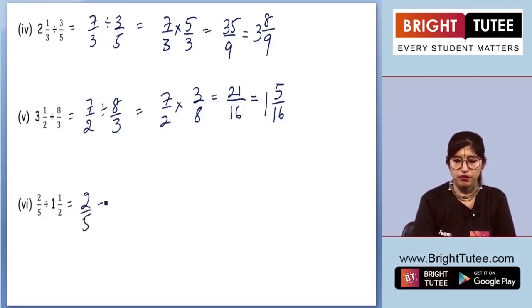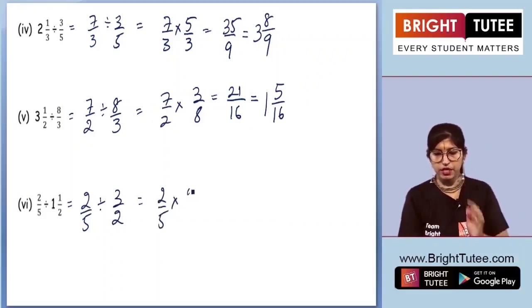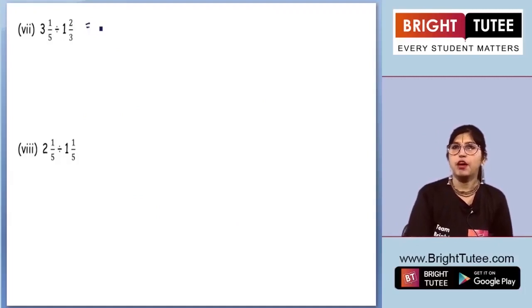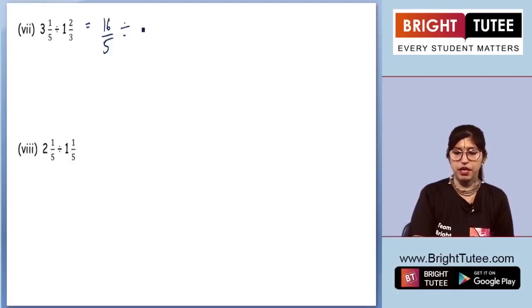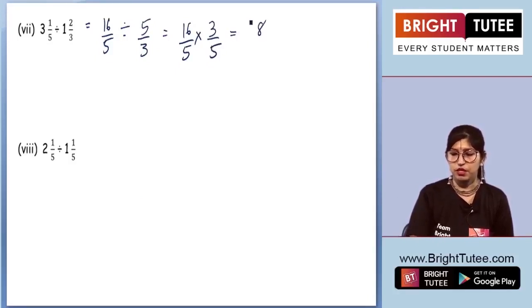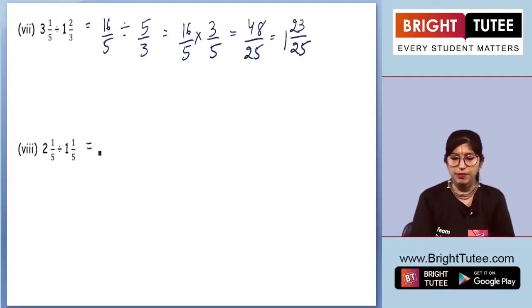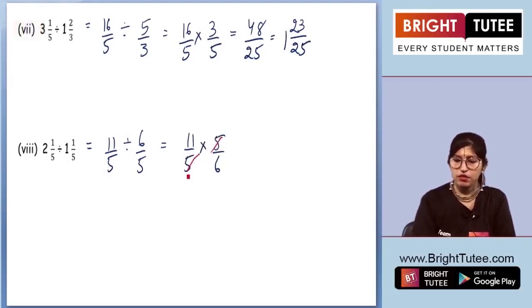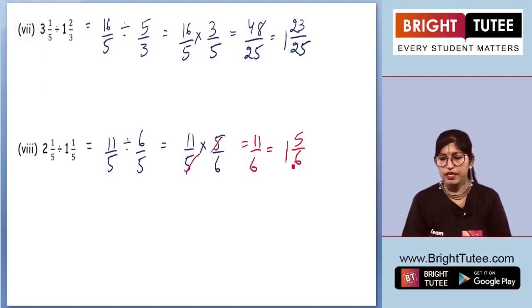For the sixth part, we convert the mixed fraction to an improper fraction, getting 3 by 2. After solving, we get 2 by 3, and multiplying gives 4 by 15. For the seventh part, both fractions are mixed fractions. Converting both: 5 times 3 plus 1 is 16 by 5, divided by 5 by 3. Multiplying and finding the reciprocal gives 48 by 25, meaning 1 and 23 by 25 is the final answer. For the last part, we get 11 by 5 divided by 6 by 5, which becomes 11 by 5 times 5 by 6. Cancelling out gives 11 by 6, which is 1 and 5 by 6 — your final answer.